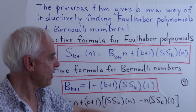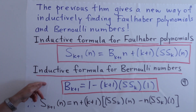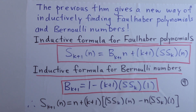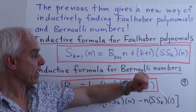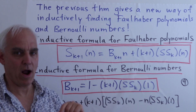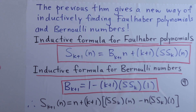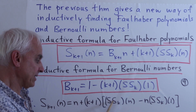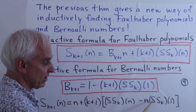The inductive formula for Bernoulli numbers is: B_{k+1} = 1 − (k+1)·S_k evaluated at 1, meaning integrate S_k and evaluate at n = 1, multiply by (k+1), and subtract from 1. Combining both formulas gives S_{k+1}(n) = n + (k+1)·[S(S_k)(n) − n·S(S_k)(1)], a formula going directly from S_k to S_{k+1} without needing a separate table of Bernoulli numbers.